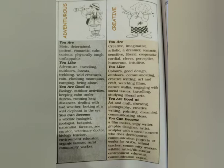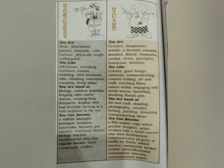If you are adventurous, you are good at biology, outdoor activities, and keeping calm under duress — meaning if there is some violent problem going on, you keep calm, you don't fight back. Dealing with bad weather, looking an elephant in the eye — meaning taking on any problem that comes to you, finding solutions rather than running from your problems. If you are adventurous, you can become a wildlife biologist, zoologist, botanist, naturalist, forester, zoo curator, veterinary doctor, biology teacher, environment educator, organic farmer, or rural community worker.